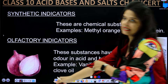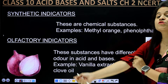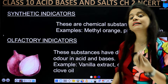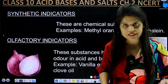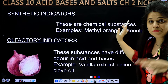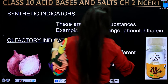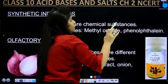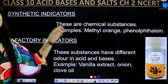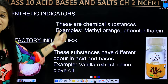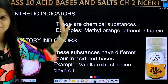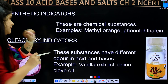Next we have synthetic indicators. These synthetic indicators are basically chemical substances. Examples include methyl orange and phenolphthalein. These are all chemical substances, and again they show different changes in acid and in base, which we will discuss.